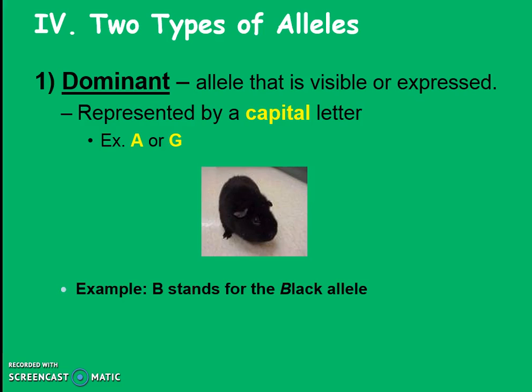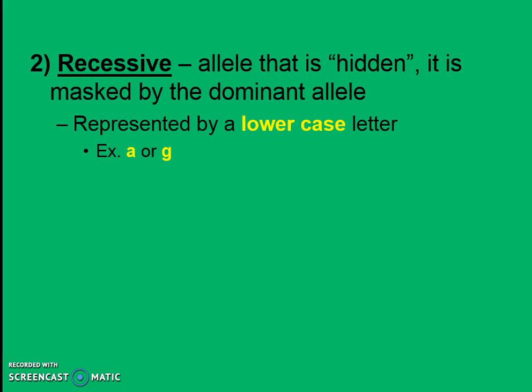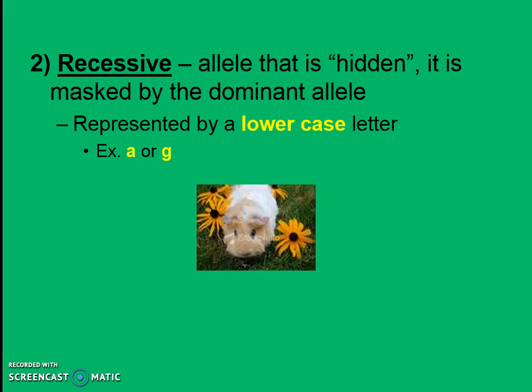The opposite of dominant is recessive. This is a version of a trait or an allele that is hidden — sometimes it's masked by a dominant allele. We're going to represent it with a lowercase letter: a little a, a little g, or a little b. Some guinea pigs are white or light colored. Since last time we picked B, we're going to stick with B — we'll use little b to represent white fur. That's recessive.